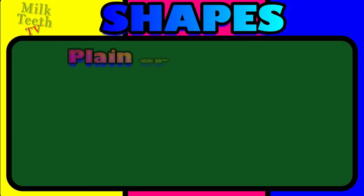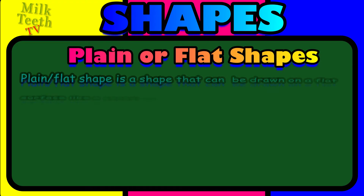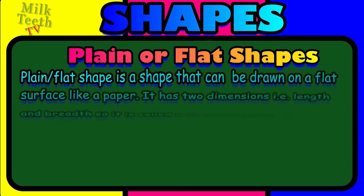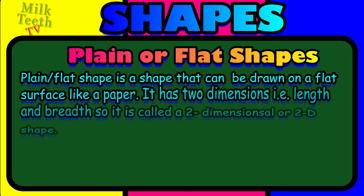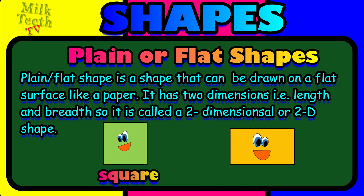Shapes. Plane or flat shapes. A plane or flat shape is a shape that can be drawn on a flat surface like a paper. It has two dimensions, that is length and breadth. So it is called a two-dimensional or a 2D shape. For example, a square and a rectangle.